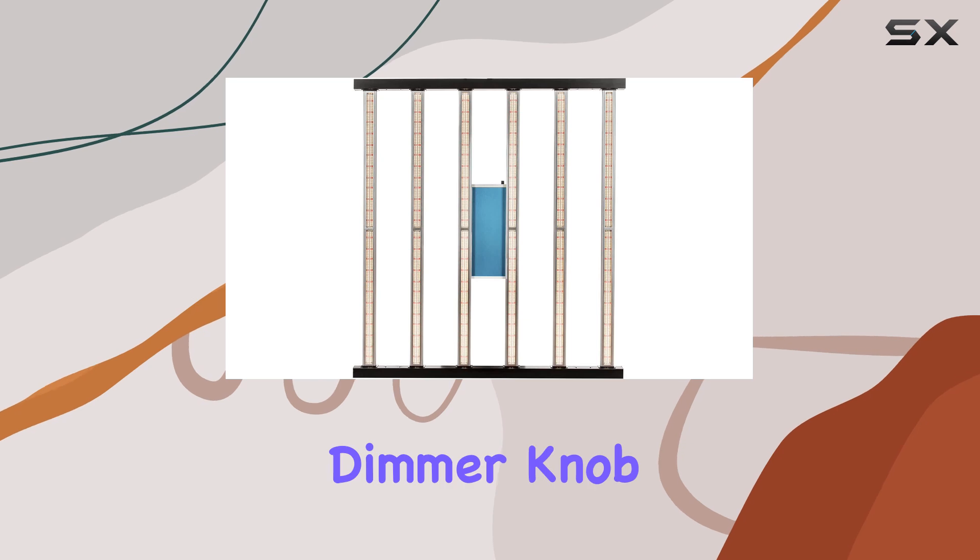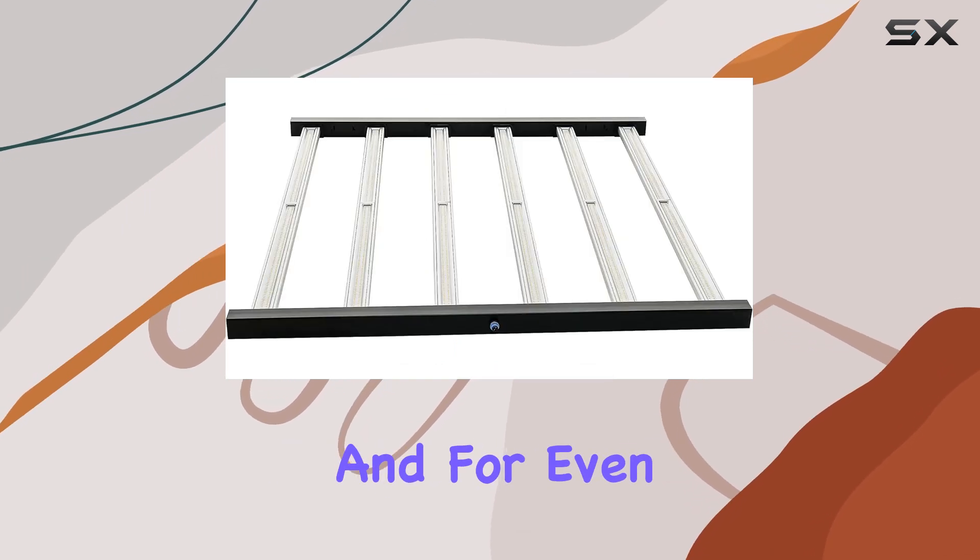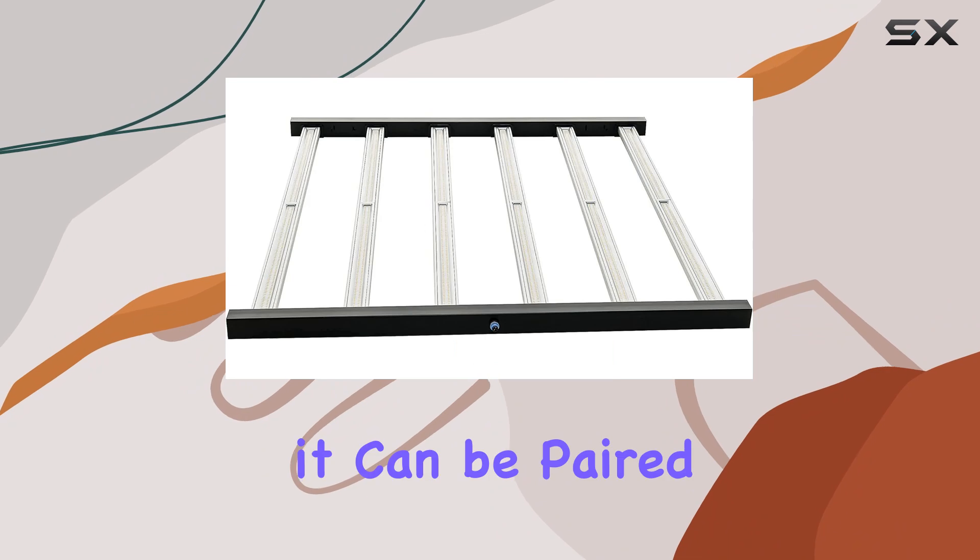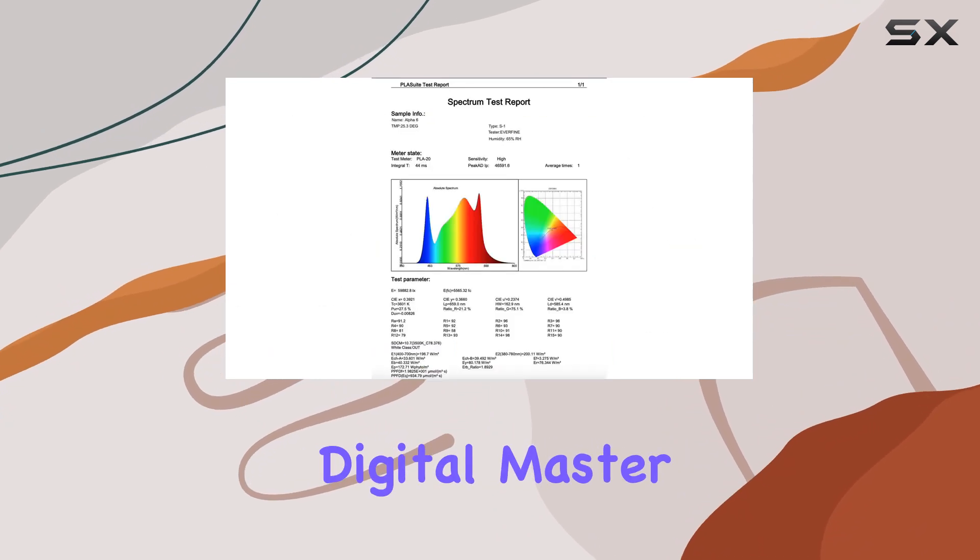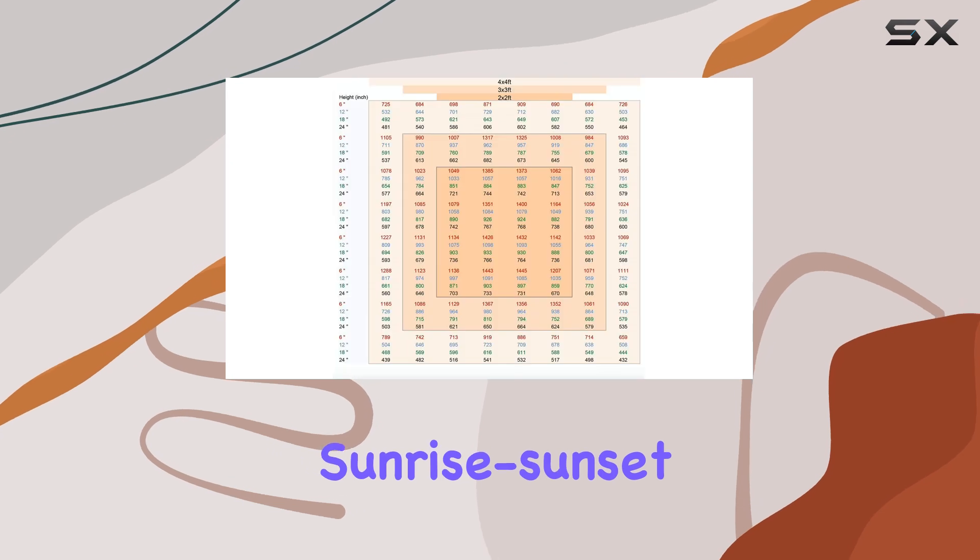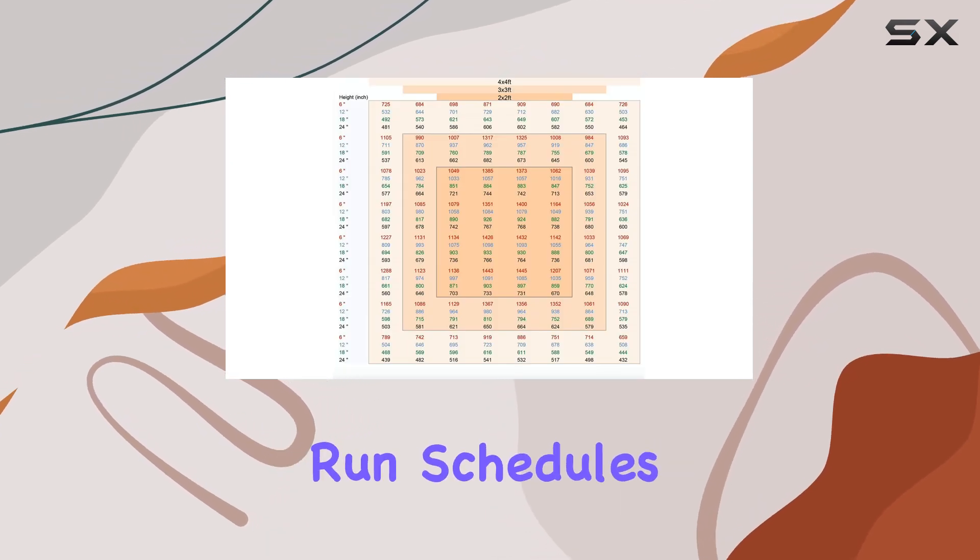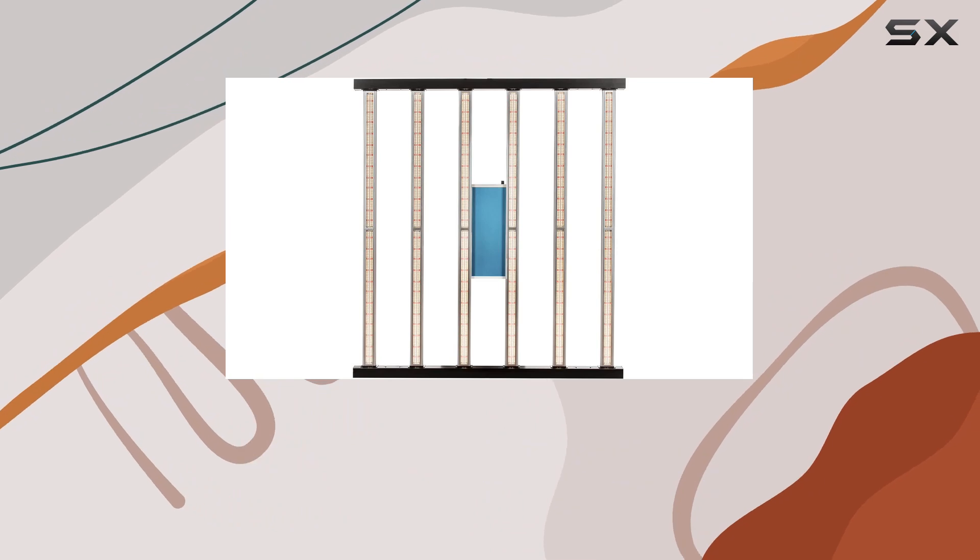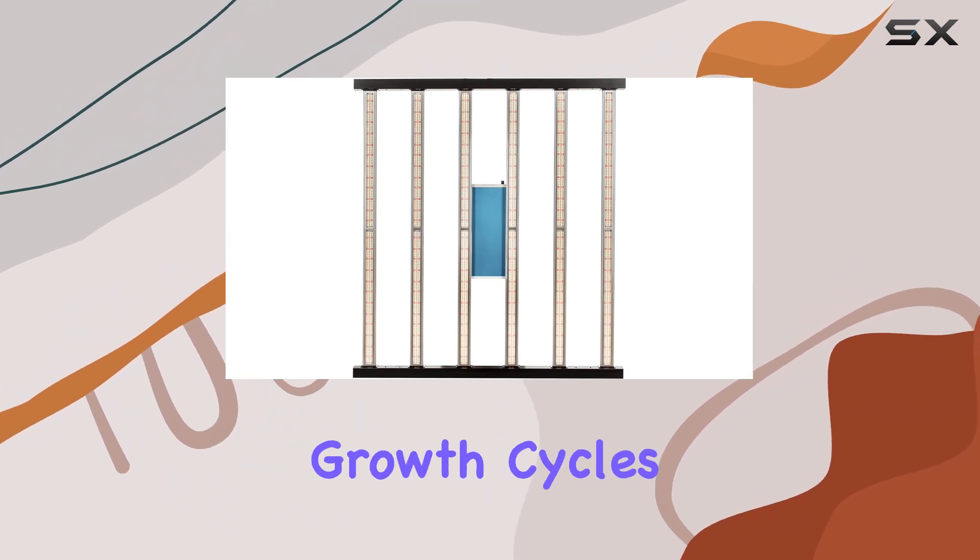The built-in dimmer knob allows for precise light control. And for even greater efficiency, it can be paired with Sonopharm's digital master controller, sold separately. This controller offers sunrise-sunset dimming, timing, and daily weekly run schedules to further optimize power usage and enhance your plant's growth cycles.